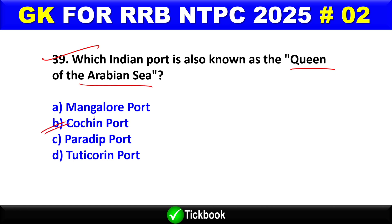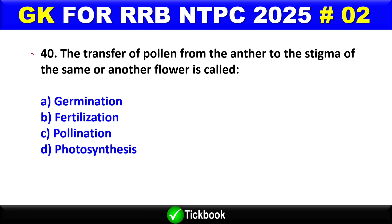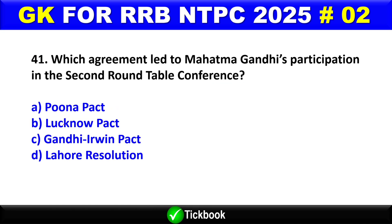Question number 39: Which Indian port is also known as the Queen of the Arabian Sea? Option B is the right answer — Kochi port. Question number 40: The transfer of pollen from anther to the stigma of the same or another flower is called?